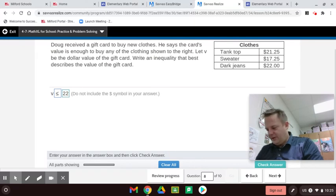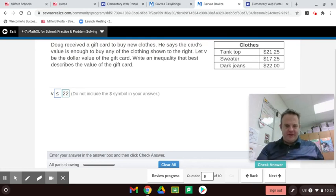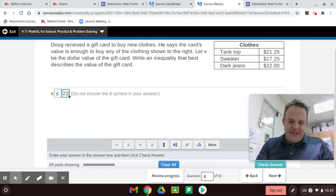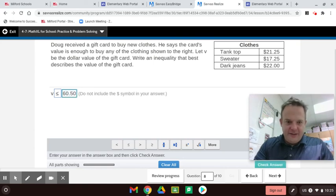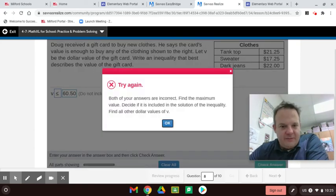So, 21, 2500. Do you guys like getting gift cards for Christmas? If you celebrate Christmas? I do. Then you could get what you want. You know what I mean? So, I added all these up, and we get $60.50. V is find the maximum value. Decide if it is included. Both of your answers are incorrect. Really? Wow.